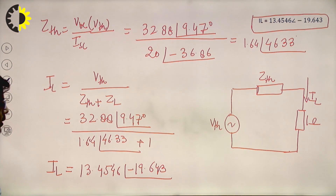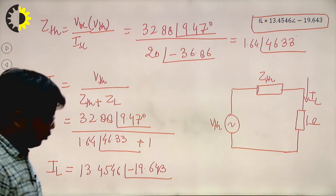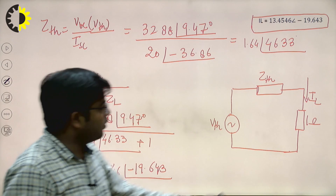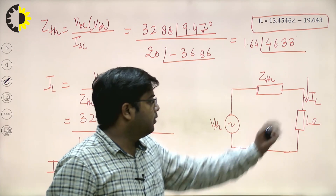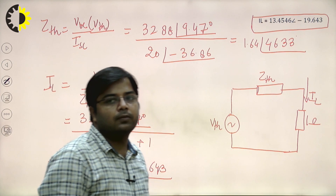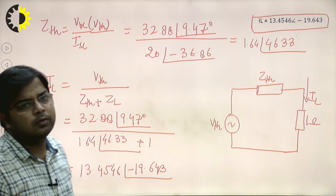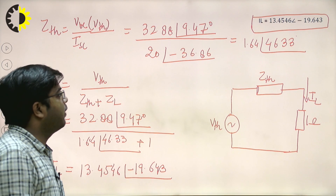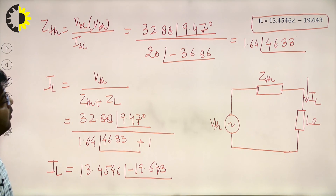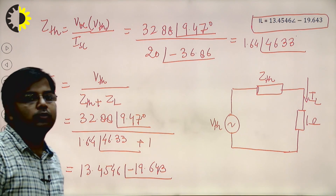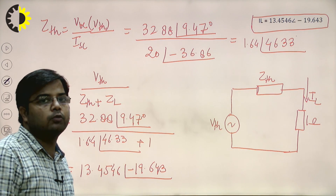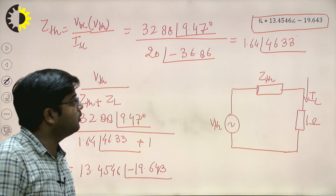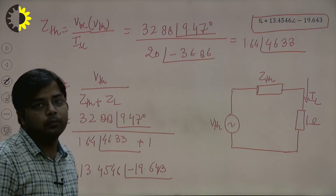This is the load current I_L through the 1 ohm load resistance. This way you can find the current by using Thevenin's theorem. That is all for today's lecture. Thank you.